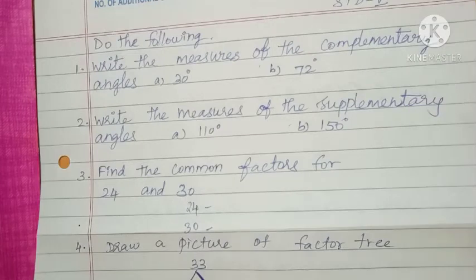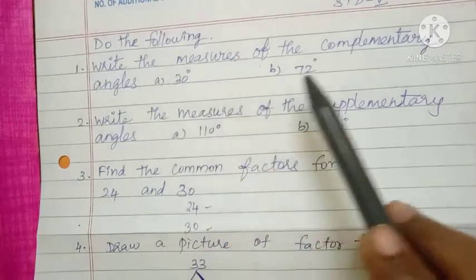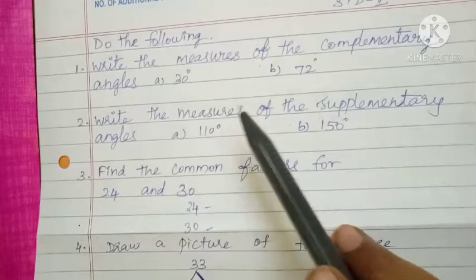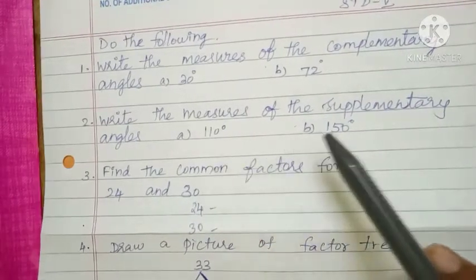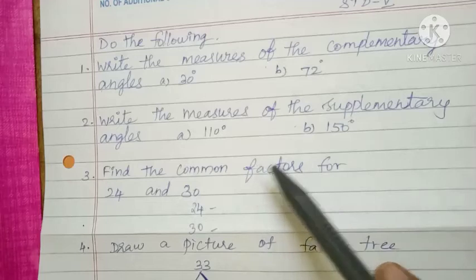Then next one, do the following: write the measure of the complementary angle 30 degrees and 72 degrees. Then second one, write the measure of supplementary angle of 110 and 150.